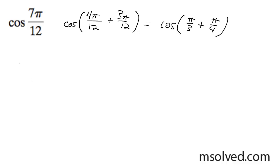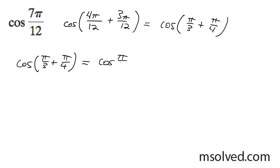Now I'm going to take this down here. Cosine of π over 3 plus π over 4 is the same thing as cosine of π over 3 times the cosine of π over 4, minus sine of π over 3 times the sine of π over 4.